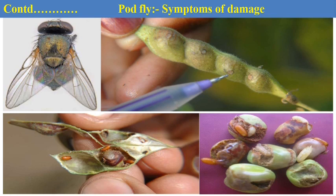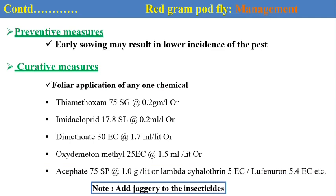In this picture, we can see the pin-head size hole on the surface of infested pods. In the second picture, you can see the pupa and the maggots feeding on the developing grains, which become unfit for human consumption. For management of tur/red gram pod fly, earlier sowing is recommended. For curative control, foliar application with thiamethoxam, imidacloprid, dimethoate, oxydemeton-methyl, acephate, lambda-cyhalothrin or quinalphos at a recommended dose at regular intervals.